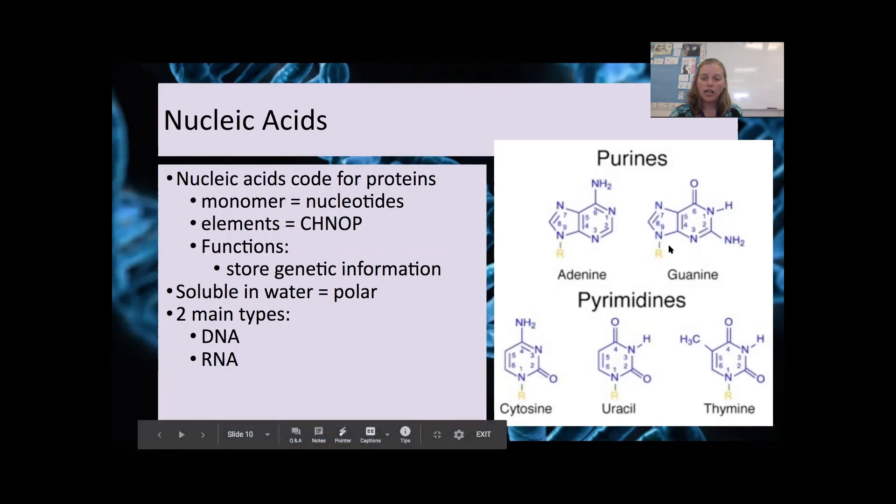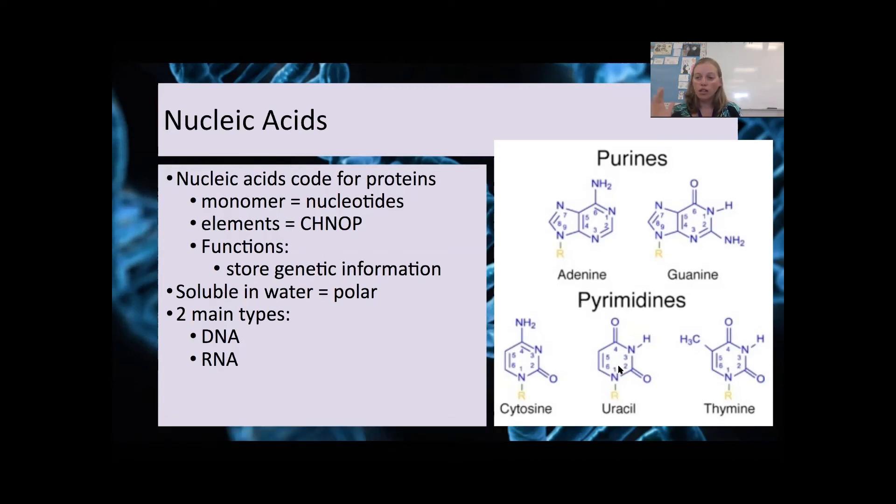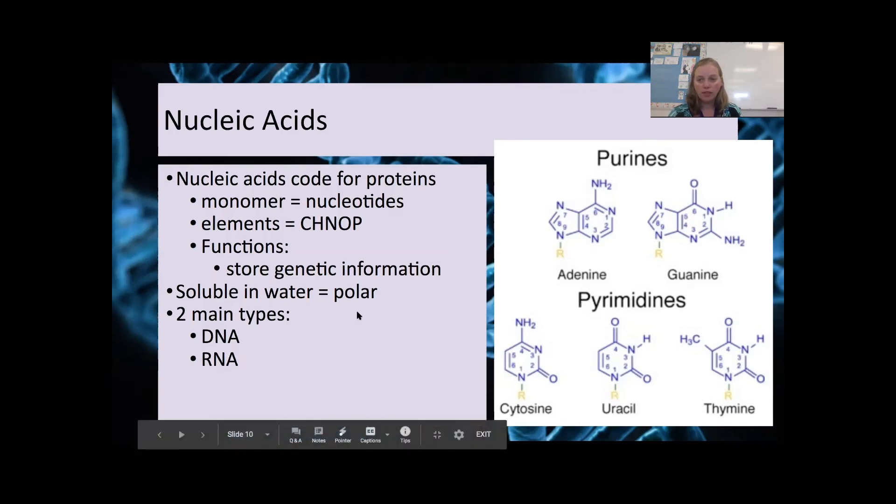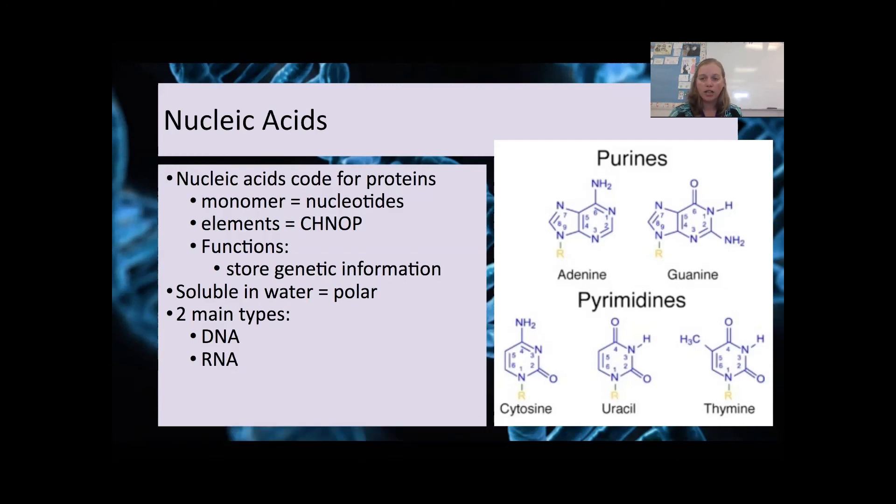And RNA will use A, G, C, and U. The order of these chemicals in a nucleic acid is going to specify the order of that protein and how it's going to be put together. They are soluble in water, which means that they are polar, and we are going to look more at how proteins are made from nucleic acids later. Right now, I just want you to know that they code for proteins using the order of these nitrogenous bases.